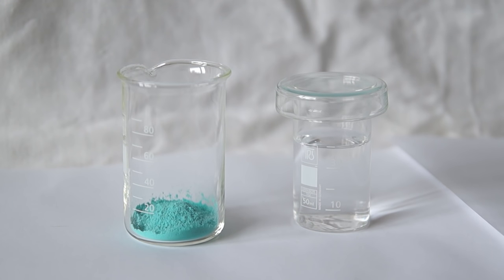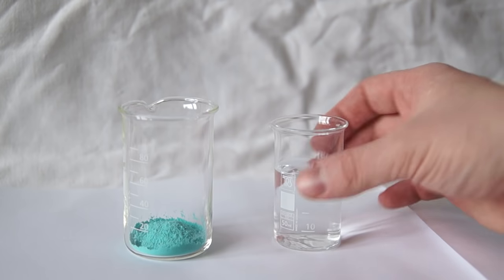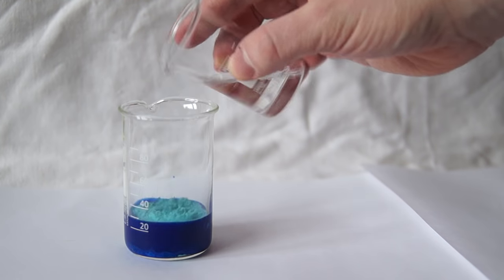Next, we need a concentrated solution of ammonia. Here, I have approximately 40 ml of 25% ammonia solution. Now, I will pour this ammonia solution to the copper carbonate.